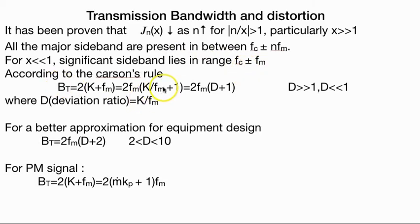According to Carson's rule, BT equals 2(K plus Fm), which is 2Fm(K/Fm plus 1), equals 2Fm(D plus 1), where deviation ratio is K by Fm.